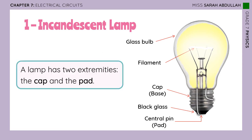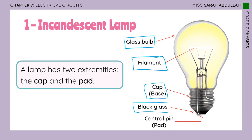As a conclusion, you have to know the different parts of the incandescent lamp and how to label them. You also have to know that a lamp has two extremities: the cap and the pad.